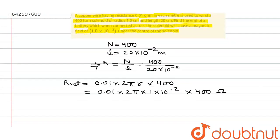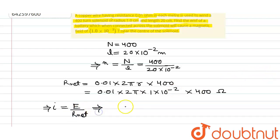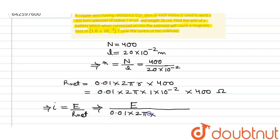The current flowing in the solenoid is given by E divided by net resistance, where E is the voltage supplied by the battery. So the current I = E divided by R_net, where R_net = 0.01 × 2π × 1 × 10⁻² × 400. This is the current flowing in the solenoid.